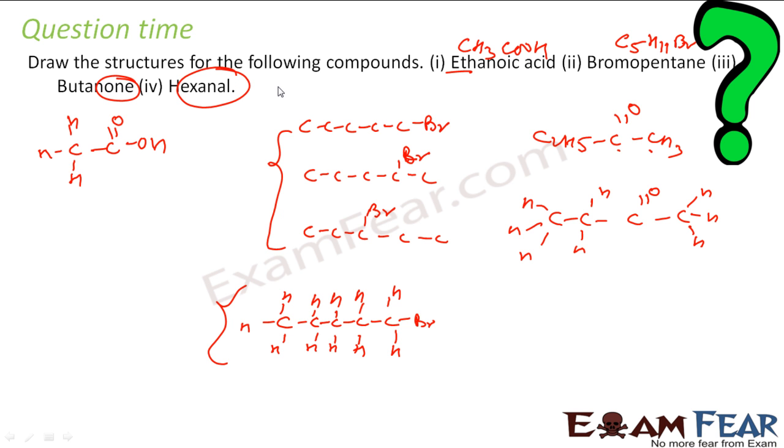Hexanal is aldehyde. So hex should have six carbons. So it will have C5H11CHO, right, because CHO also has one carbon. So this is my structure. So it will be something like this: one, two, three, four, five carbons. And then I have CHO.